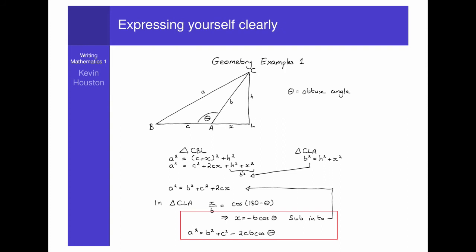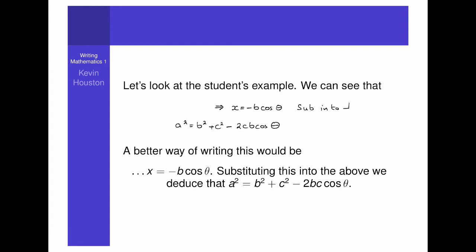A better way of writing this would be, blah blah blah, x equals minus b cosine theta, full stop. Substituting this into the above, we deduce that a squared equals b squared plus c squared minus 2bc cosine theta. Note that we are explaining what is going on by using the phrase, we deduce that.